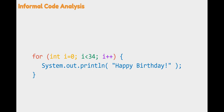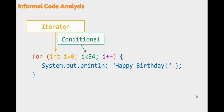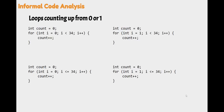When we are doing our informal code analysis, we need to look at the three parts of our for statement. We need to look at the iterator — what is our iterator starting off at? Our conditional — what do we go up to? And then our update statement — how do we increment every single time? We are declaring an integer named count set equal to zero. We have a for statement. Every time that for statement iterates, that count goes up by one. When we are done, count should tell us how many times that has iterated.